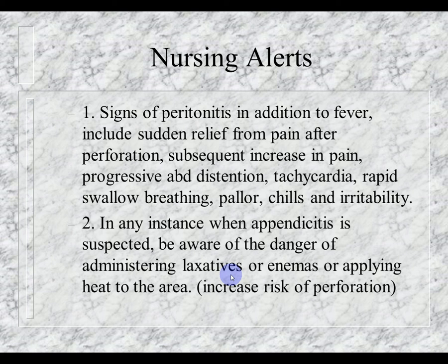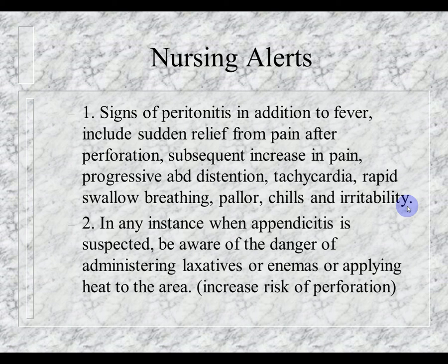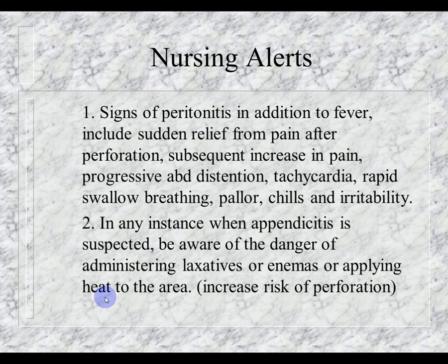Nursing Alert #1: Signs of peritonitis include sudden relief from pain after perforation with a subsequent increase in pain, progressive abdominal distention, tachycardia, rapid shallow breathing, pallor, chills, and irritability. If a child who has had diffuse and then localized right lower quadrant pain suddenly says the pain is gone — that's not a good thing; it likely indicates perforation. Nursing Alert #2: When appendicitis is suspected, be aware of the dangers of administering laxatives, enemas, or applying heat, as this stimulates bowel motility and increases the risk of perforation.